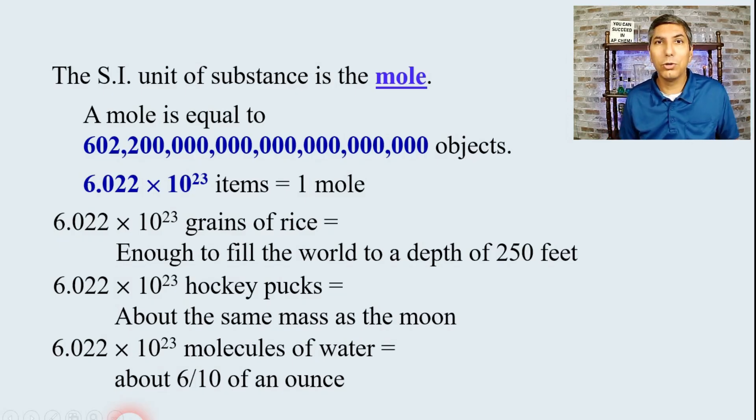Now, this number, 6.022 times 10 to the 23rd, is called Avogadro's number. It's called that in honor of Amadeo Avogadro. He was a scientist who did some research that helped pave the way for the discovery of that number. Very important for us.